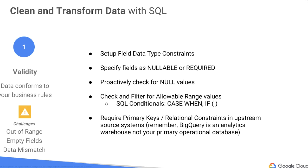And you can also, in upstream systems — since BigQuery is an analytics warehouse — require those primary keys and require those constraints in those upstream systems before it even gets into BigQuery. So if you're the BigQuery data analysis admin and guru of your data analysis group, you can put these constraints on these source systems. If someone's giving you bad transactional data, don't clean up their mess. Tell them to clean up their data and validate it before it even makes it into your systems.